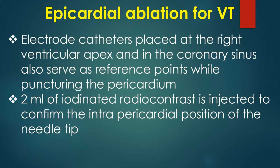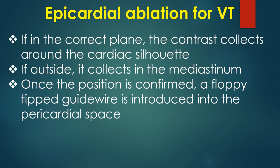Electrode catheters placed at the right ventricular apex and in the coronary sinus serve as reference points while puncturing the pericardium. 2 ml of iodinated contrast is injected to confirm the intrapericardial position of the needle tip. If in the correct plane, the contrast collects around the cardiac silhouette. If outside, it collects in the mediastinum.